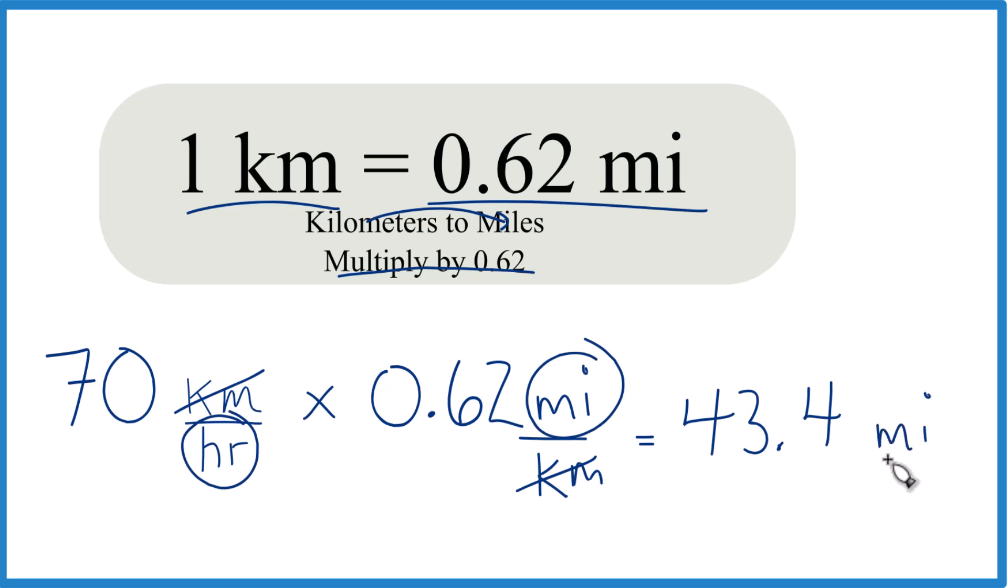So, when we convert 70 kilometers per hour to miles per hour, we end up with 43.4 miles per hour.